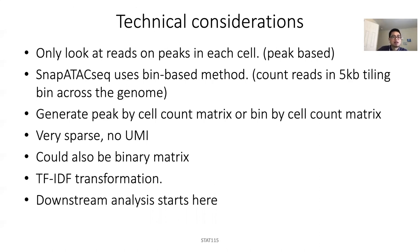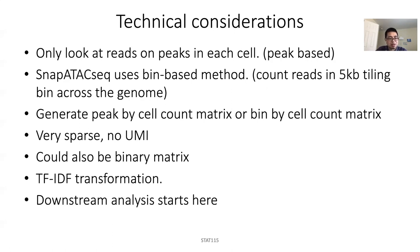After we get the counts, we generate either a peak-by-cell or bin-by-cell count matrix. As mentioned, this matrix is very sparse. There's no UMI, and because it's really sparse, anything bigger than one you can assign as one, and if it's zero it stays zero — so you make the matrix binary. But for this binary matrix, it needs special treatment: we call it TF-IDF transformation, which I'll explain in the next slide.